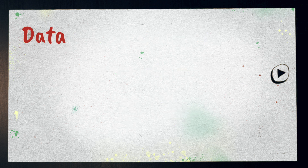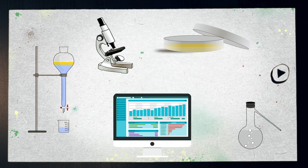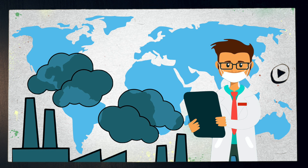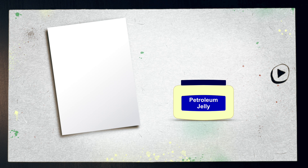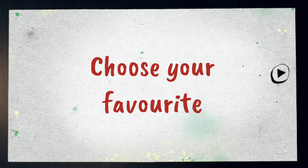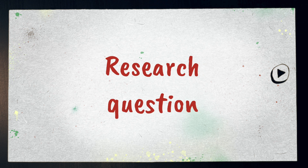As for the data you suggest collecting, remember to keep it realistic — find out what equipment and information you have access to and work with that. But be open-minded. You might think you don't have access to equipment that can directly measure air pollutants, but with a bit of research you'll find you can measure air pollution with some white card and some petroleum jelly like Vaseline — I'll leave that for you to look into. After you've got all of your ideas together, all you have to do is choose your favourite. Once you've done that, you need to translate your idea into a research question, and that's for the next video.